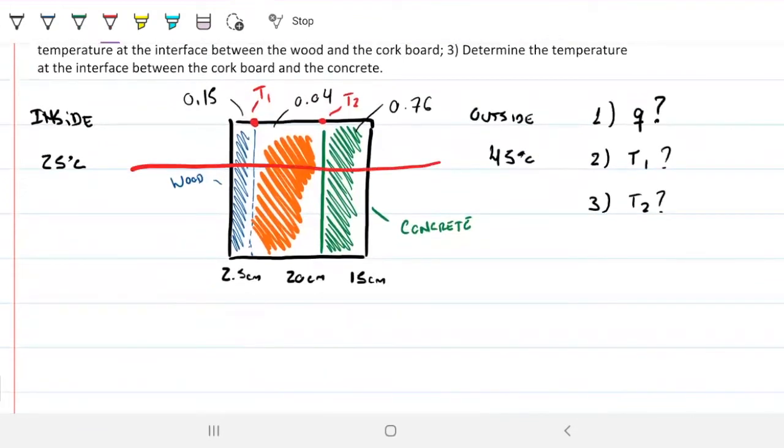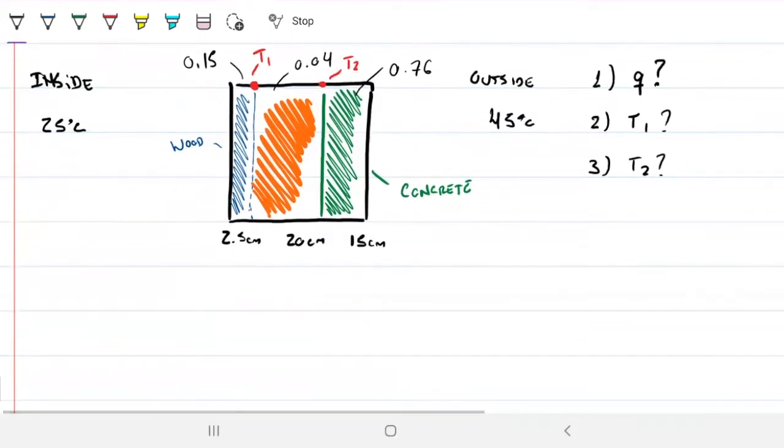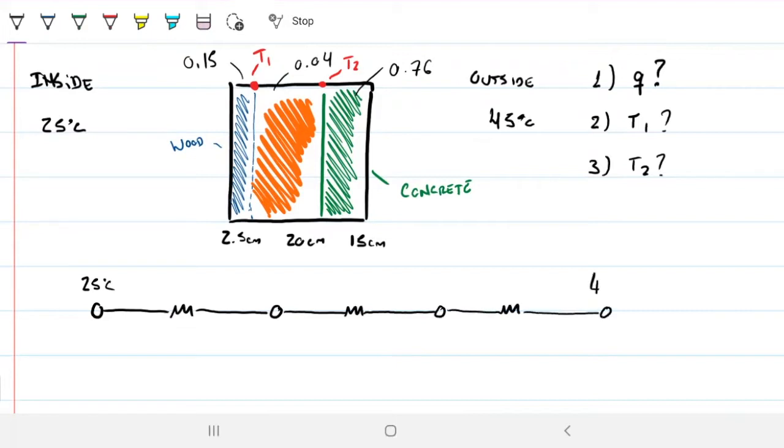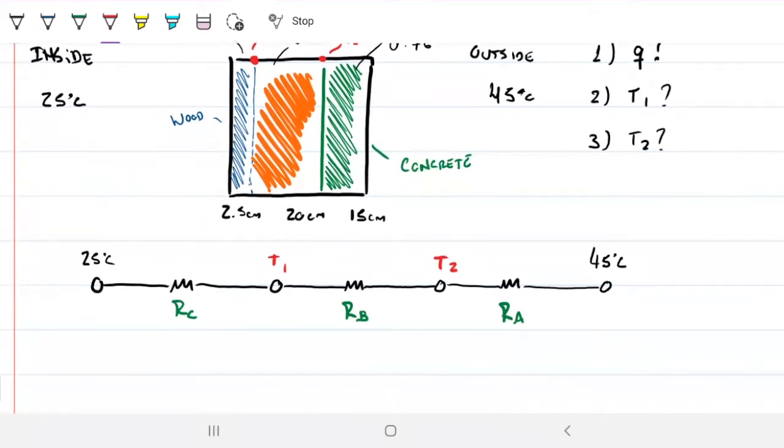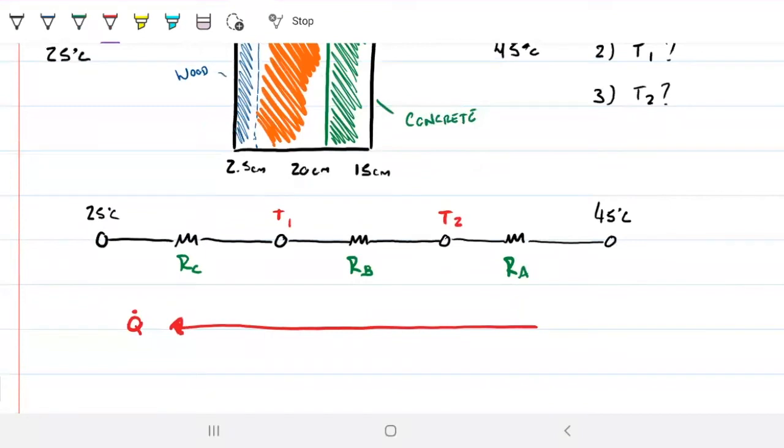First things first, we know heat's going to flow from hot to cold. We don't think about that anymore, it's in our blood. So I can draw an equivalent circuit, which is going to have the 25 here. Then we're going to have a resistance due to the wood, a conductive resistance. Then we're going to have a resistance due to the cork board, another conductive one. A resistance due to the concrete, another conductive one. And then I can finally reach the outside at 45 Celsius. This is what I call T1. This is what I called T2. I'm going to go ahead and call them RA, RB, and RC, respecting the distance that Q is going. And just to keep it nice and consistent, I'm going to put my arrow here to remind myself that I know for sure Q is going in this direction.